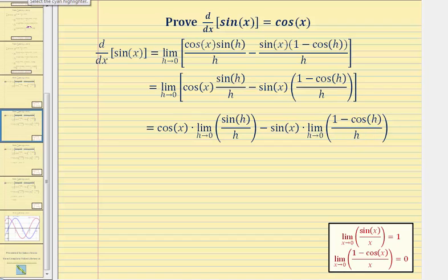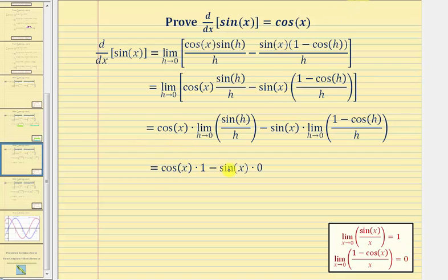At this point, we need to recognize we have two special limits here, shown below for reference. The limit as h approaches zero of sine h divided by h equals one, and the limit as h approaches zero of the quantity one minus cosine h divided by h equals zero. So we have cosine x times one minus sine x times zero, which simplifies nicely to just cosine x. We've proven that the derivative of sine x with respect to x equals cosine x.